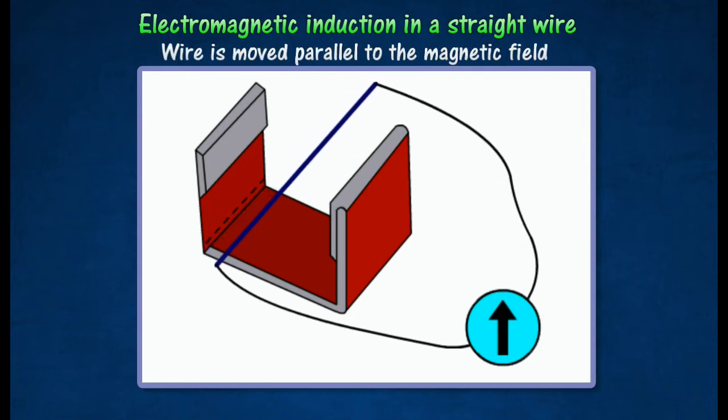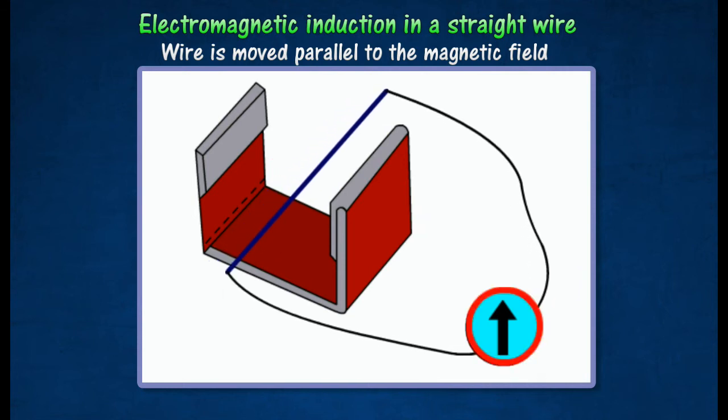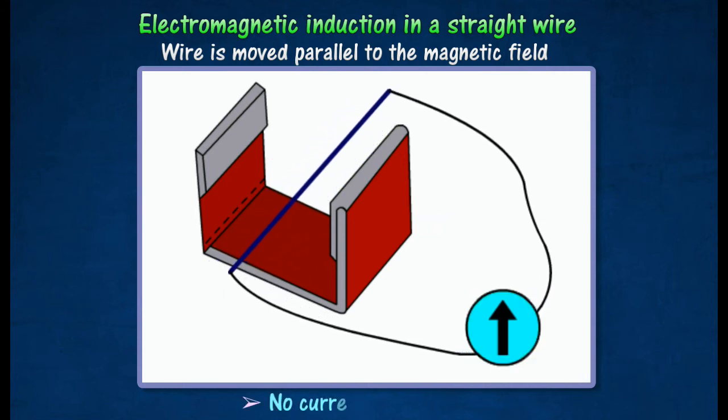If the wire is moved parallel to the magnetic field, the galvanometer needle remains in the center as zero position, indicating that no current is produced.